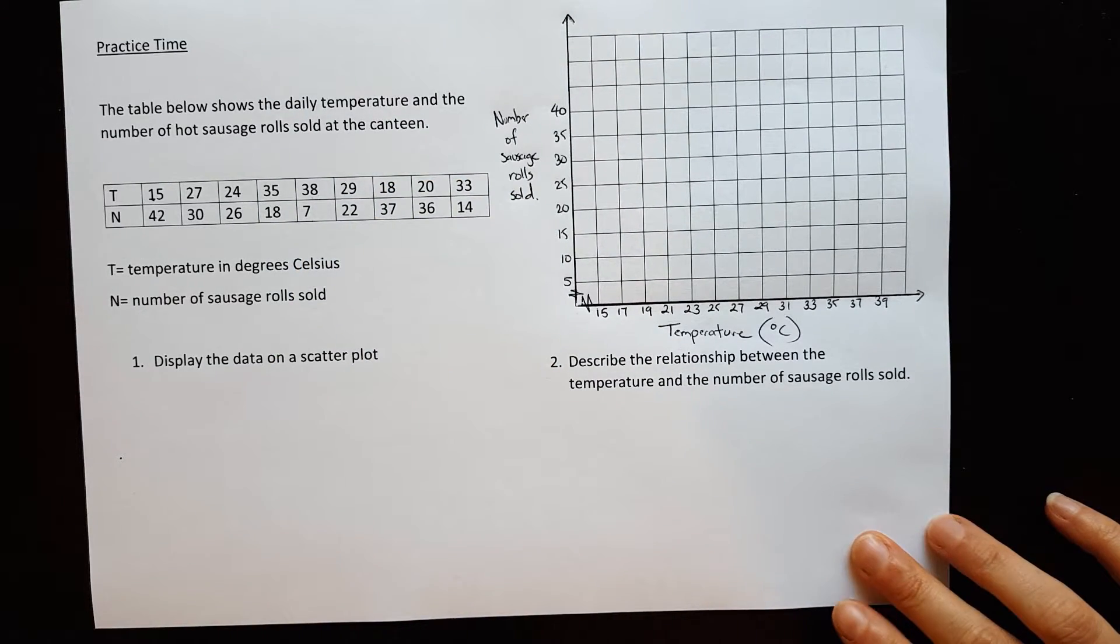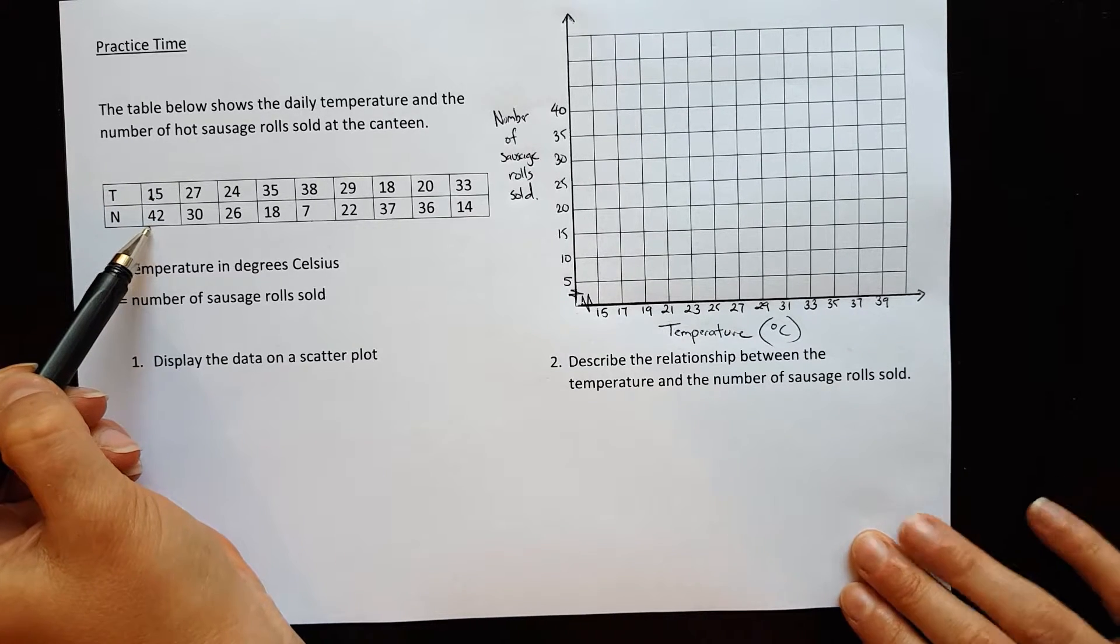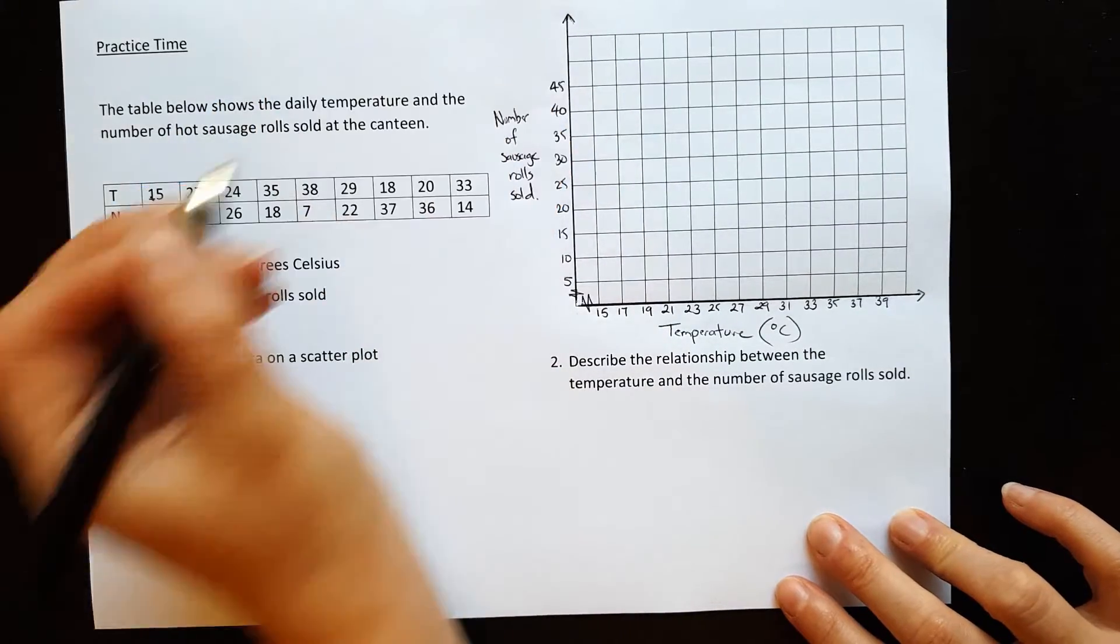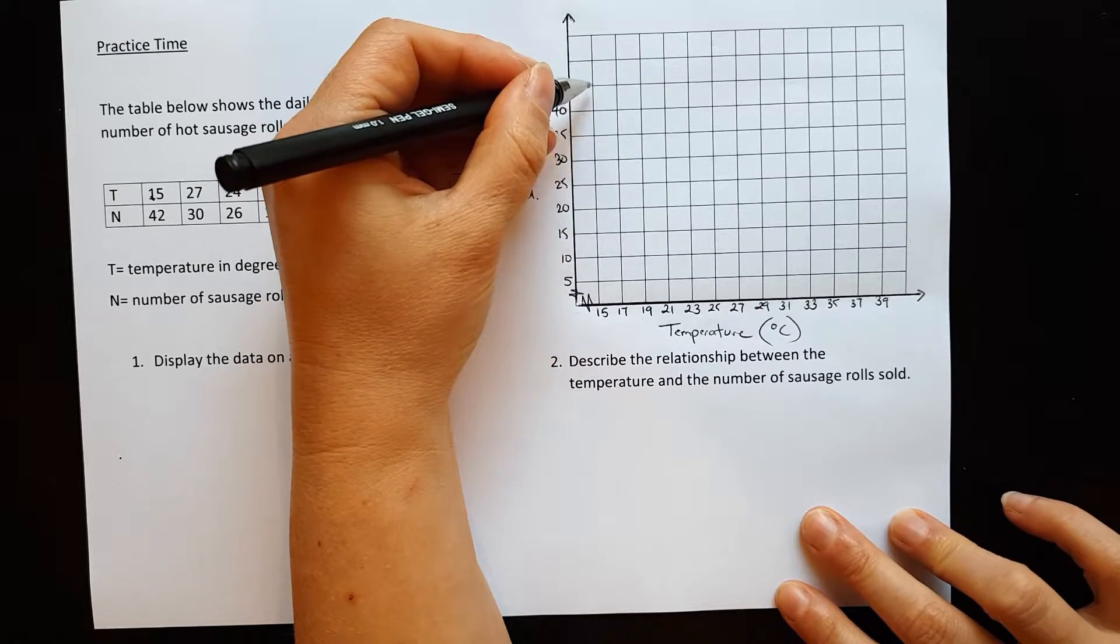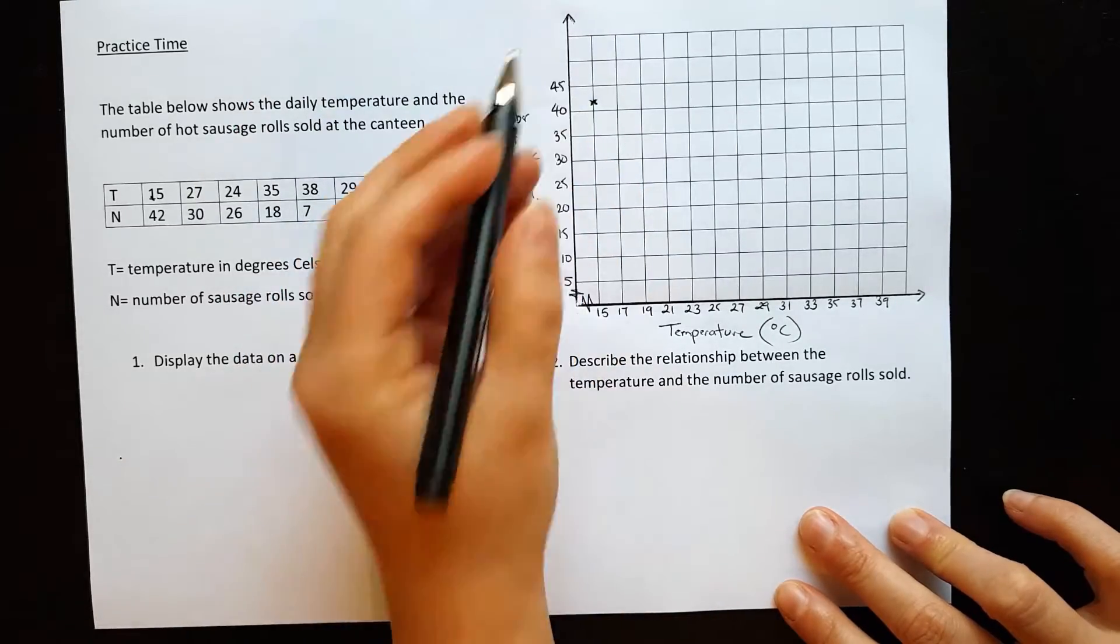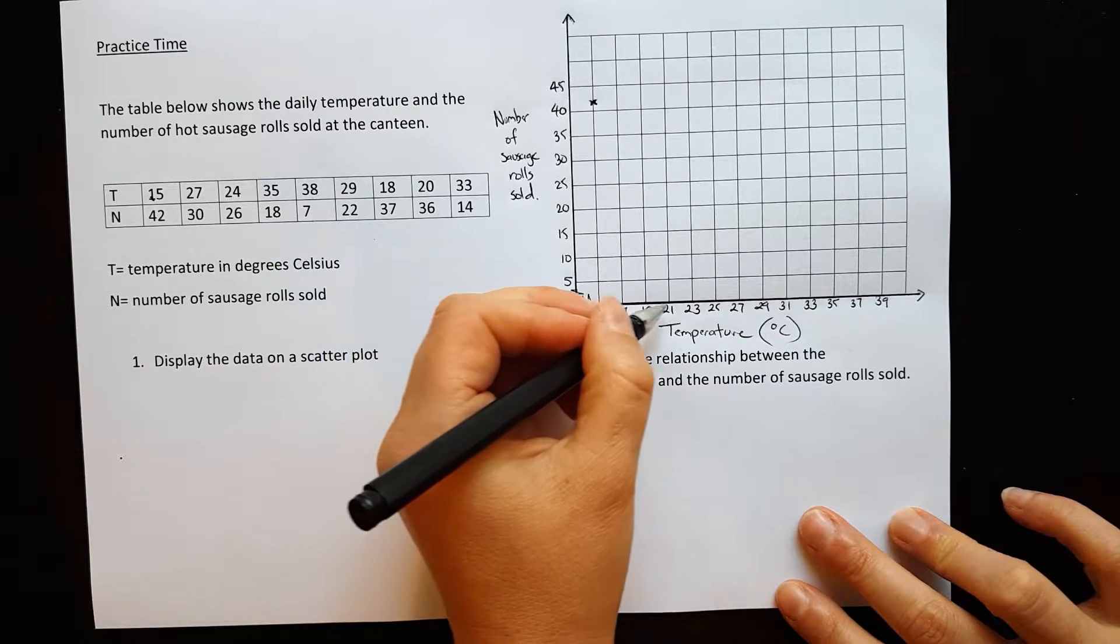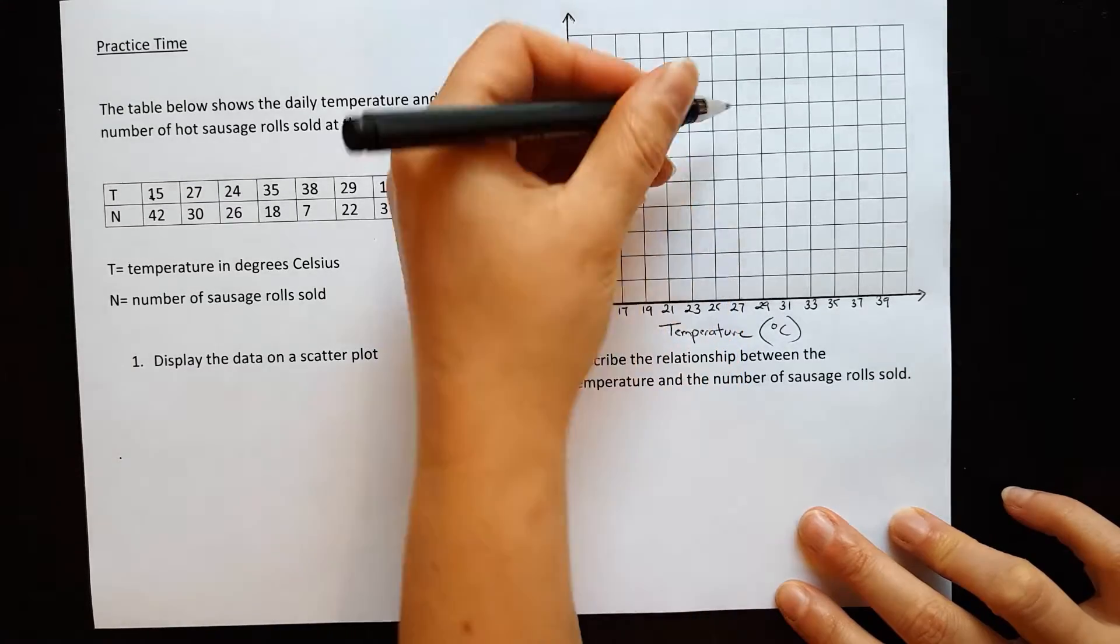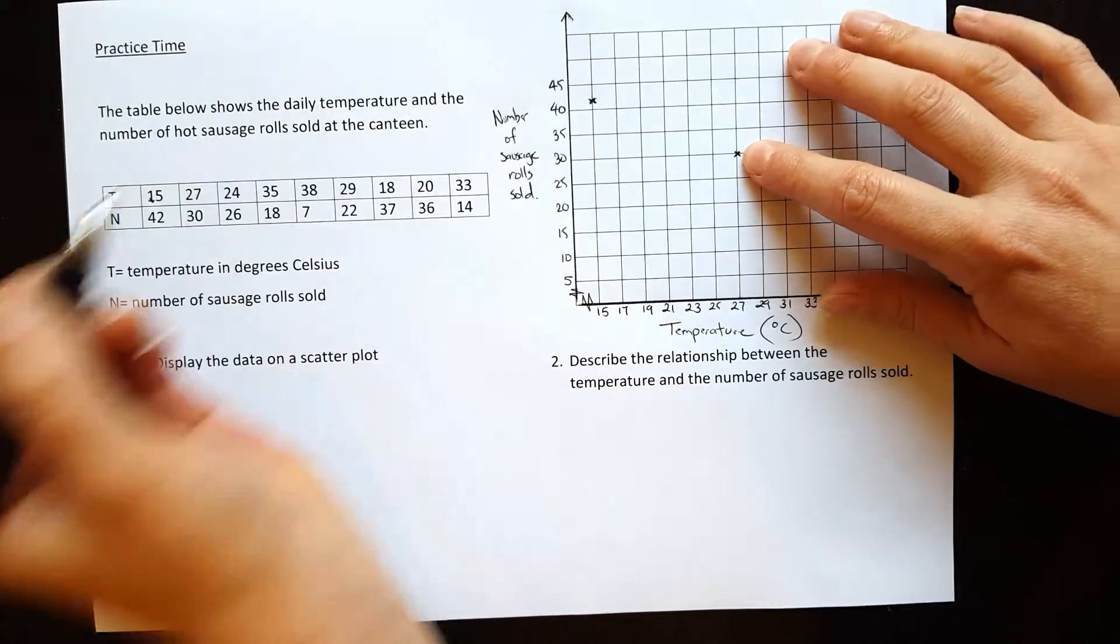Let's plot the graph. When the temperature is 15 degrees, we've sold 42 sausage rolls. I actually need to go higher, I didn't go quite far enough. I need to go to 45. So 15, we go to 42 way up here, so about there. So cold day, sold quite a few sausage rolls. 27 degrees, we sold 30. So temperature is 27, sold 30, there and there. 30 sausage rolls.